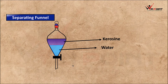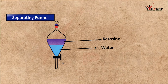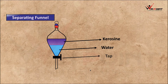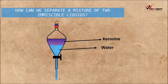How can we separate it? Now we are going to separate it by opening this tap. When we open this tap, water is at the bottom and it is going to come out. Now the tap is on and the water is coming out.